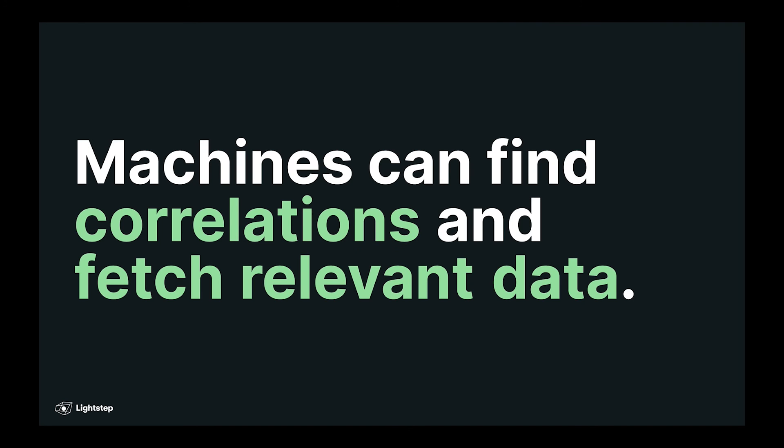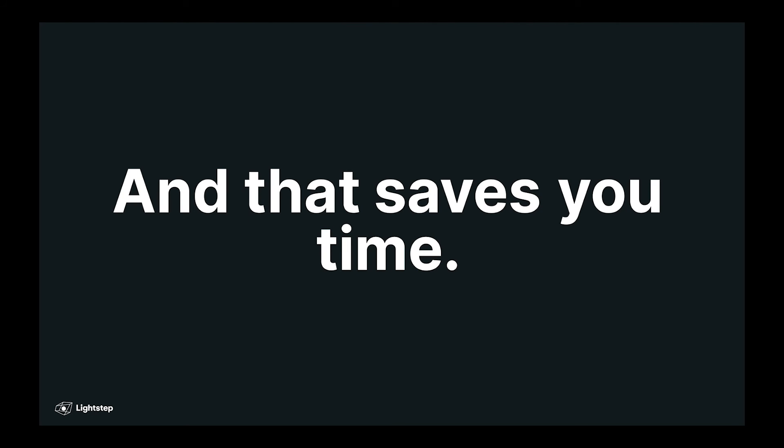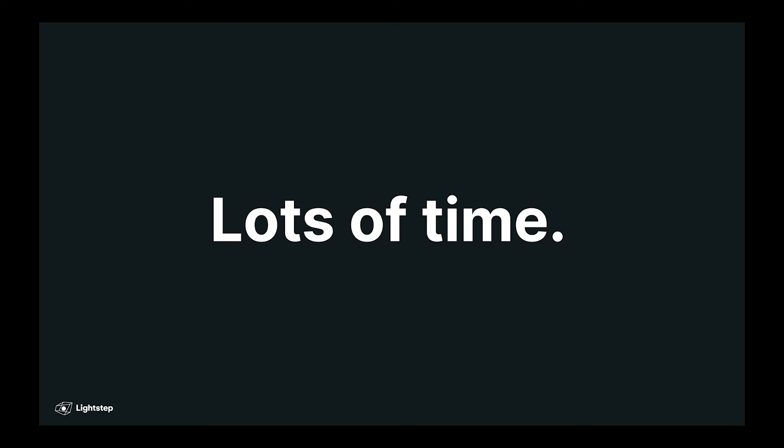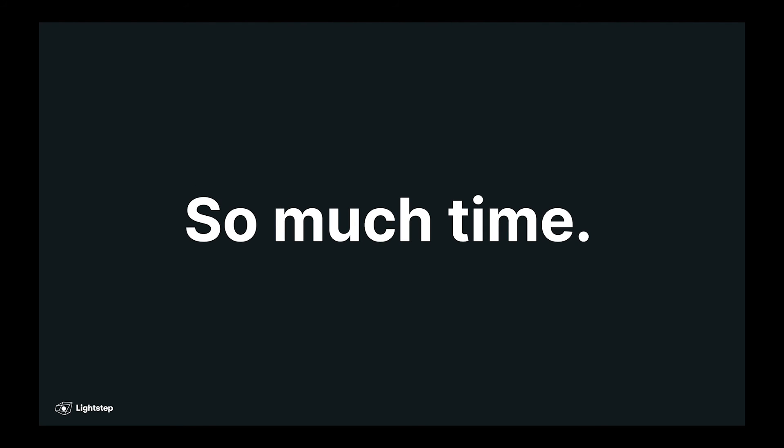However, machines can definitely find correlations and fetch relevant data for you because that's objective, provided you have the data structures that allow them to do that. Being able to automatically find those correlations and associate your metrics with your logs, with your traces, that saves you time. It saves you lots of time. It saves you tons of time. So much time that it actually changes the way you observe your system.